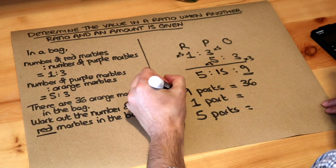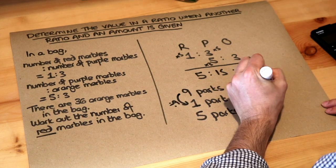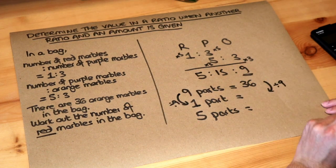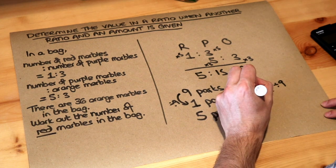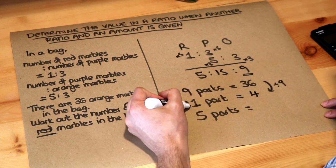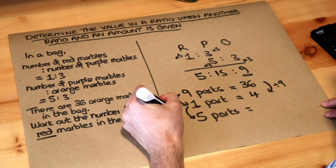So one part, to get from nine to one we've divided by nine so we're dividing that by nine. 36 divided by nine is four and then to get from one part to five parts that's five times bigger.